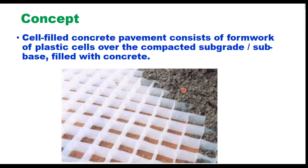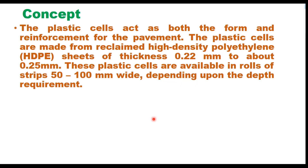Concept-wise, cell-filled concrete pavements consist of formwork of plastic cells laid over the compacted subgrade and subbase, and then these cells are filled with concrete. These plastic cells act as both the formwork as well as reinforcement for the pavement. These cells are made from reclaimed high-density polyethylene (HDPE) sheets of thickness 0.22 mm to 0.25 mm, made from waste plastic, available in rolls of strips 50 to 100 mm wide. The depth of the plastic cell is 50 to 100 mm, so the concrete thickness can be 50 to 100 mm depending on design requirements.